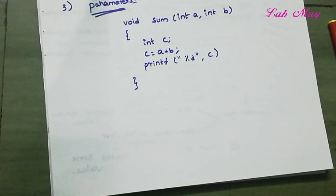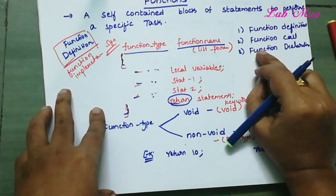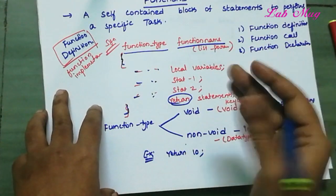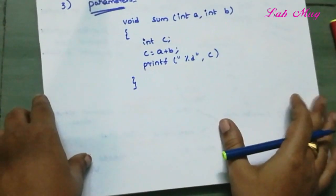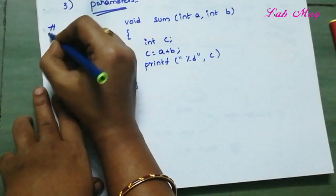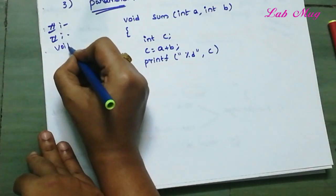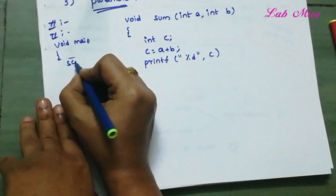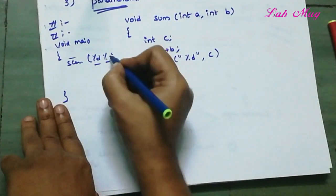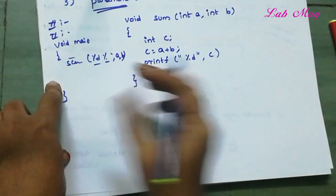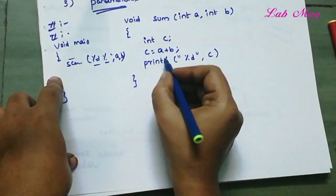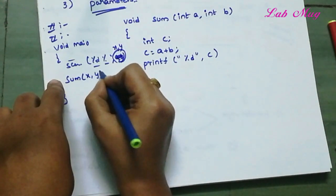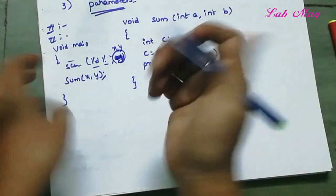So here we have the three points: function definition, function call, and function declaration. The function definition is already defined. Next, I will use a function call. In the main method — hash include, void main — we read a and b values using scanf %d %d. Then from main method we call the sum function. The calling statement ends with a semicolon.